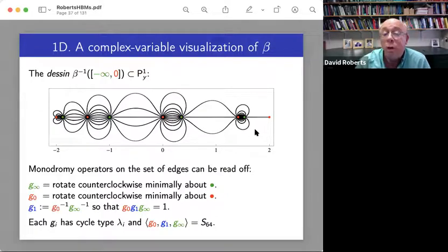And this visualization is somewhat artificial because I'm treating G1 differently. So each GI has a cycle type. The previous slide was at the level of partitions. But this slide is deeper. It's at the level of permutations.